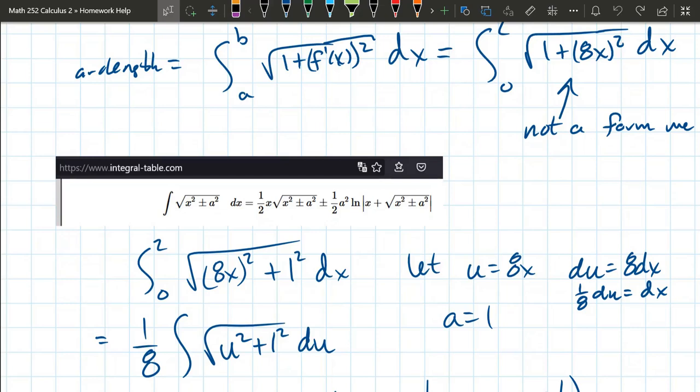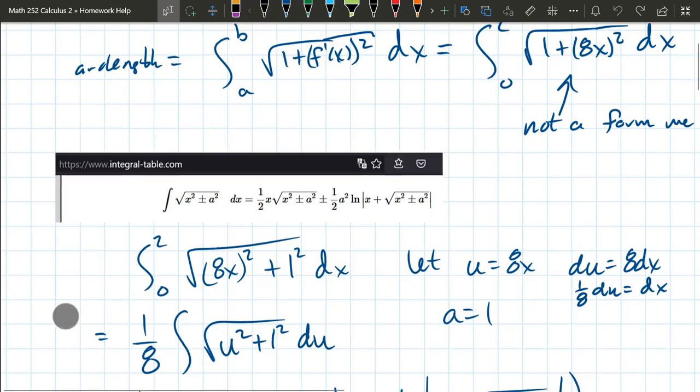And now you can see that it is x squared plus a squared. Well, u squared plus a squared. a is 1. So I wrote that down.